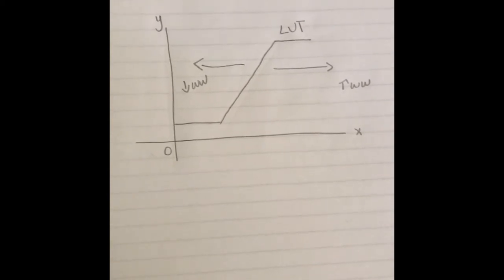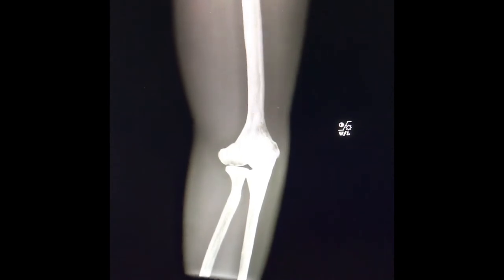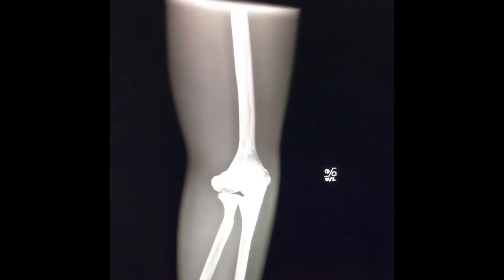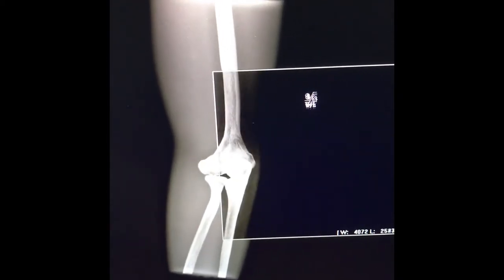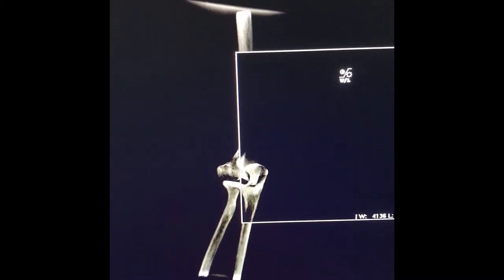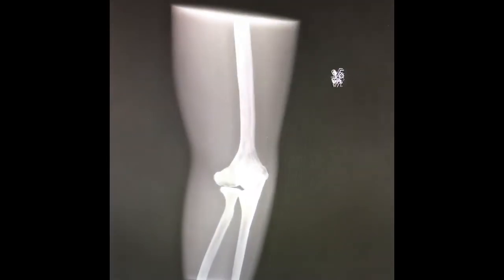Now I am going to show you an example of both graphs on the computer. This is the original image, and this is the window width/window level tool. If you move the mouse up and down it changes the density, and side to side changes the contrast. The window level starts at 2059. Increasing it to 4079 increases the density of the image. Decreasing it to negative 41 decreases the density and increases the brightness of the image.